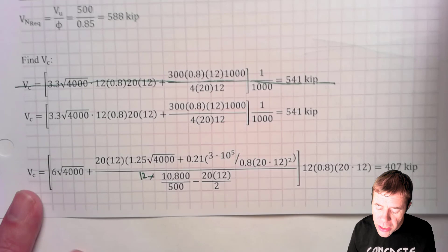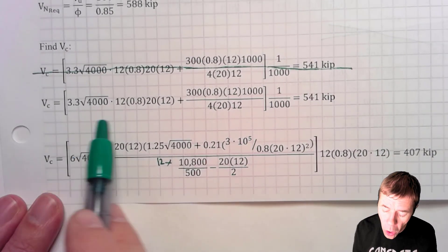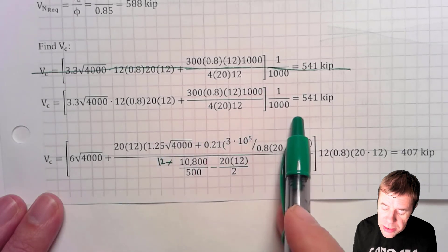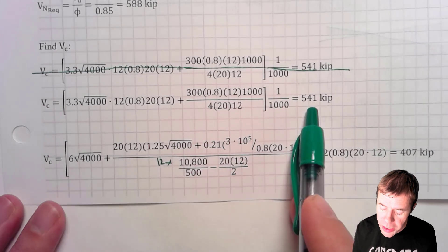Now we have to calculate and find what our Vc is. There are three equations to do this. I've shown you these in a previous video. Here are two of them all plugged in, all kinds of numbers plugged in here for the different values. And the first one, I come up with 541 kips.